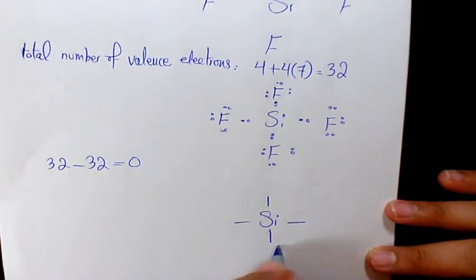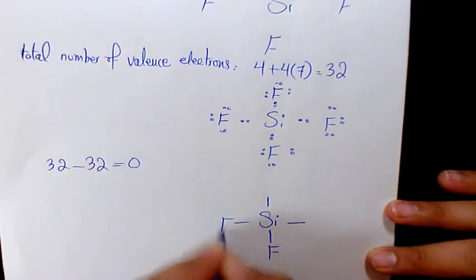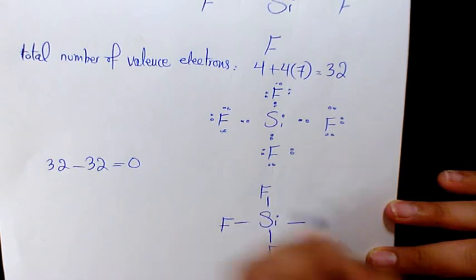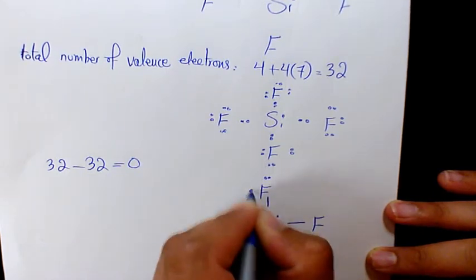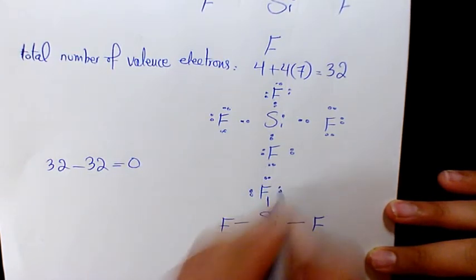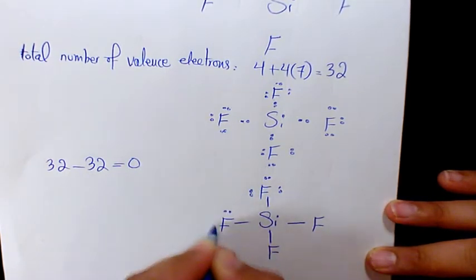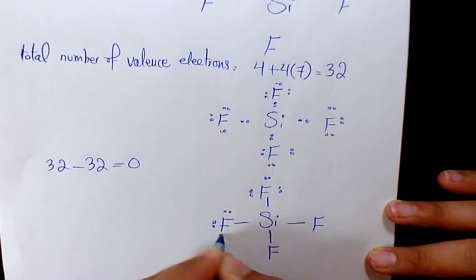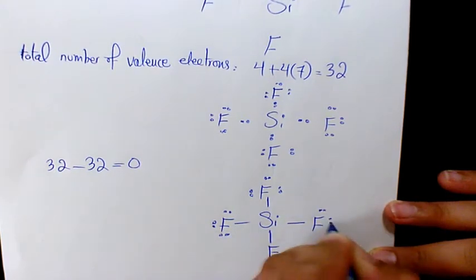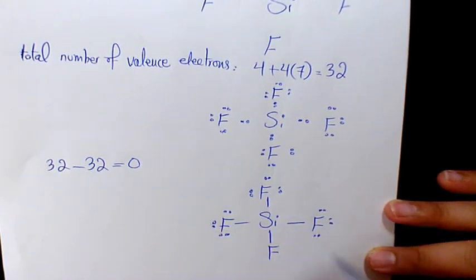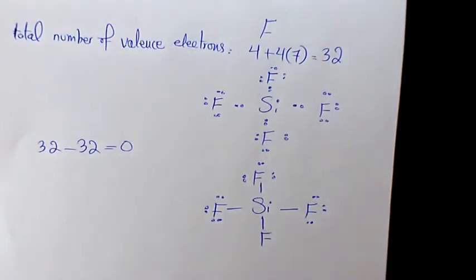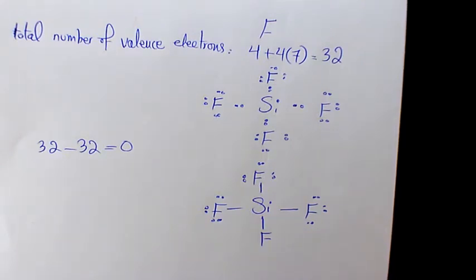We just need to replace the shared electron dots with dashes for the bonds. So silicon is in the center with dashes going to each of the four fluorines, and each fluorine has three lone pairs. That gives us nine lone pairs total on the four fluorines. That's the Lewis structure of silicon tetrafluoride.